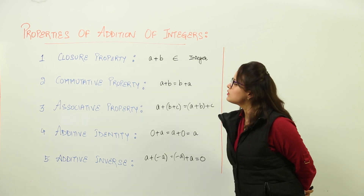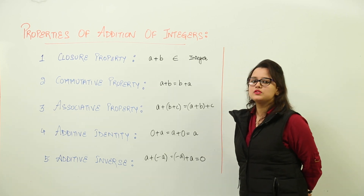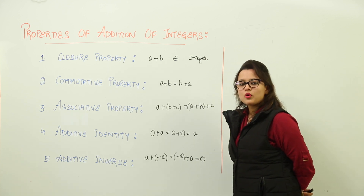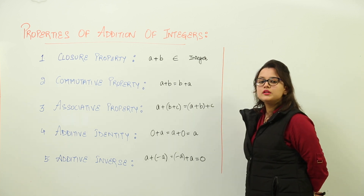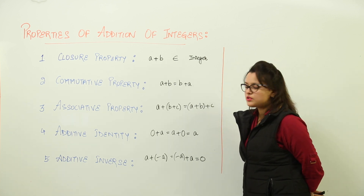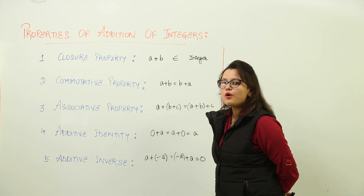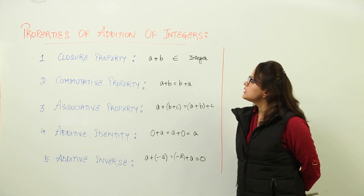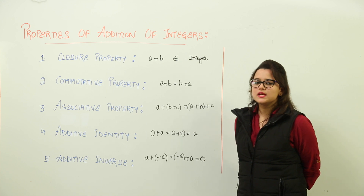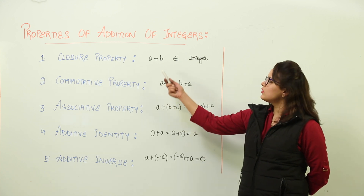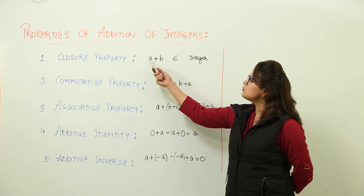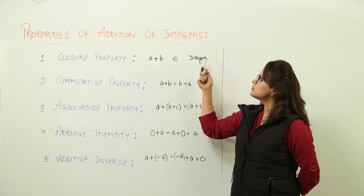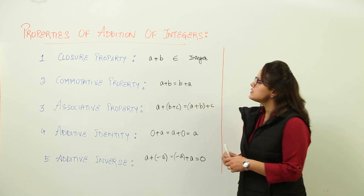Properties of addition of integers. Let us discuss what are the properties while you are doing addition of two or more integers. The first property is the closure property, which says that if you are adding any two integers, your sum will belong to the integers.